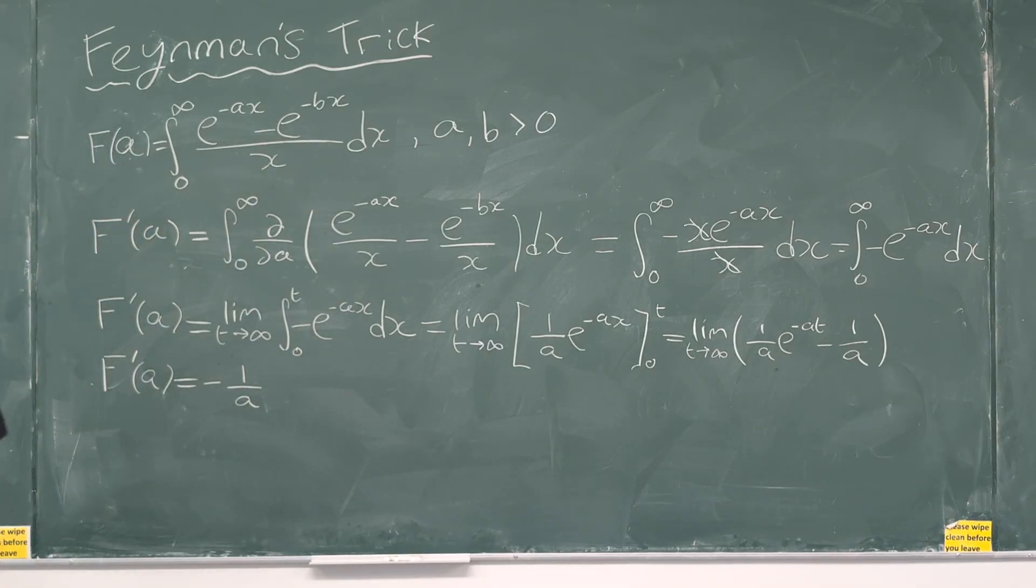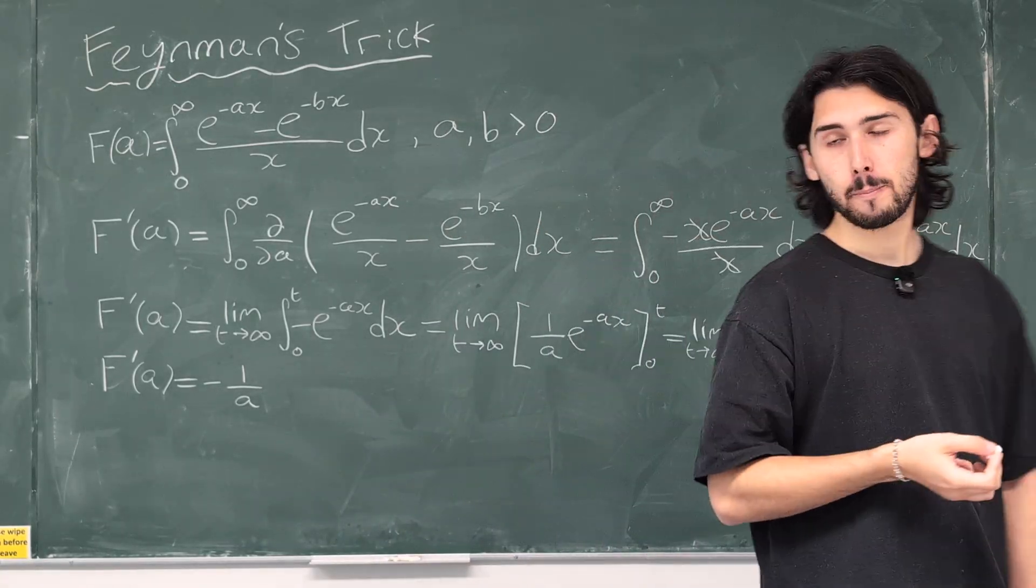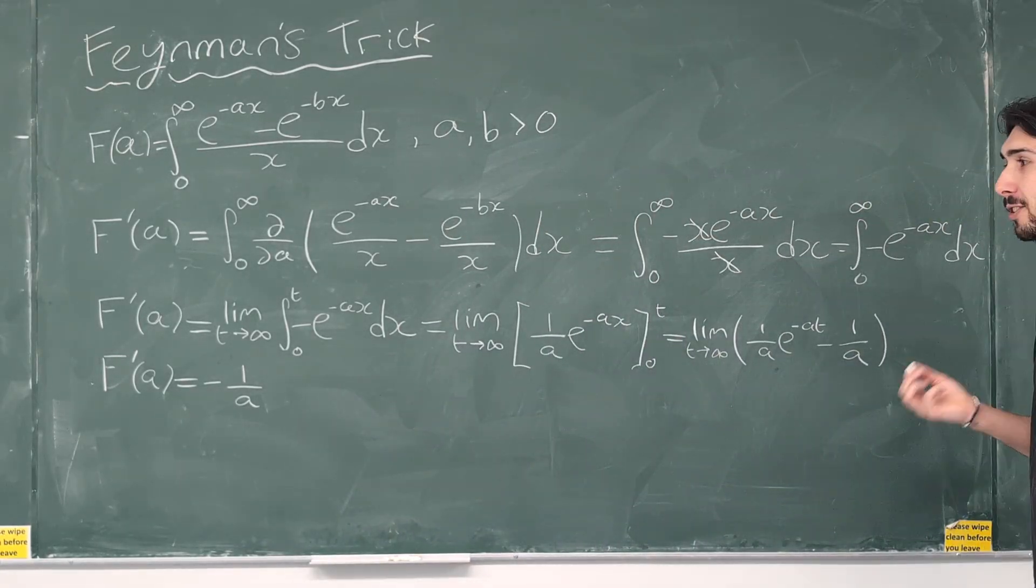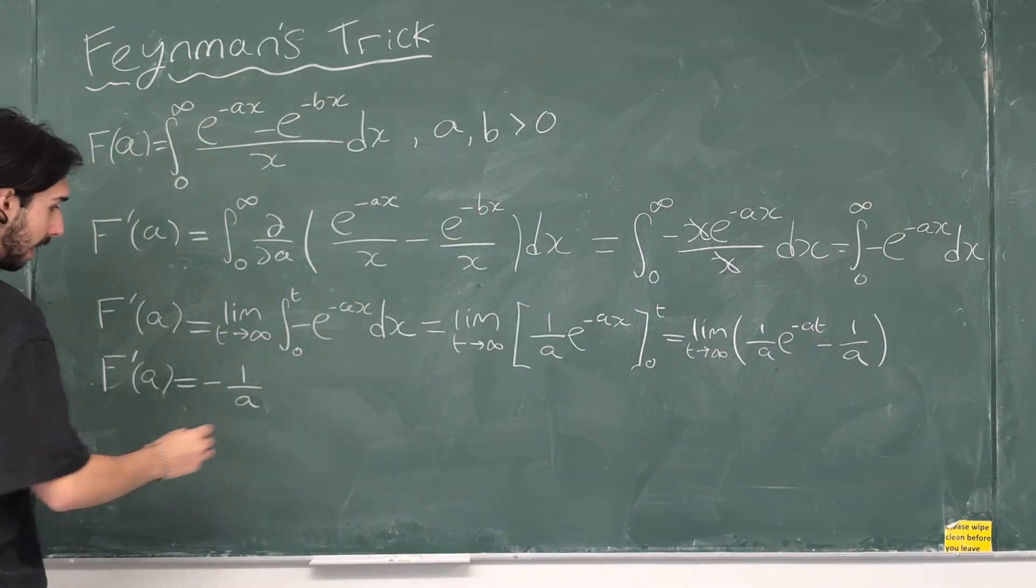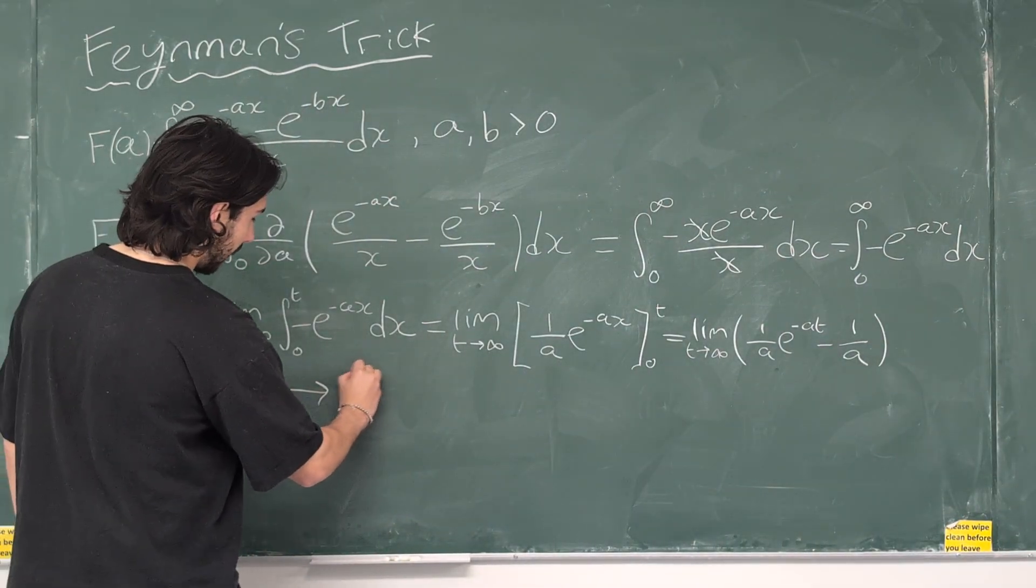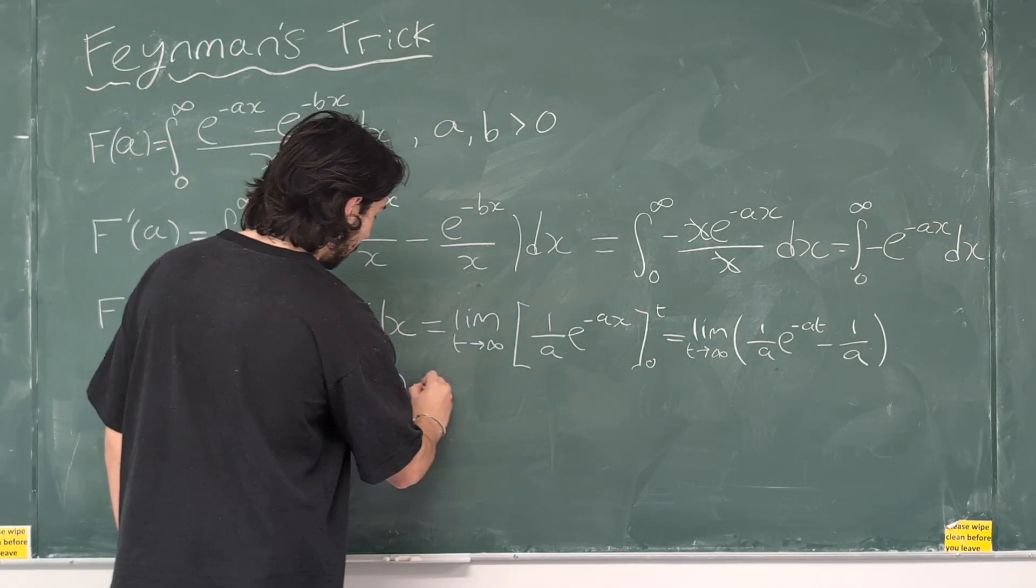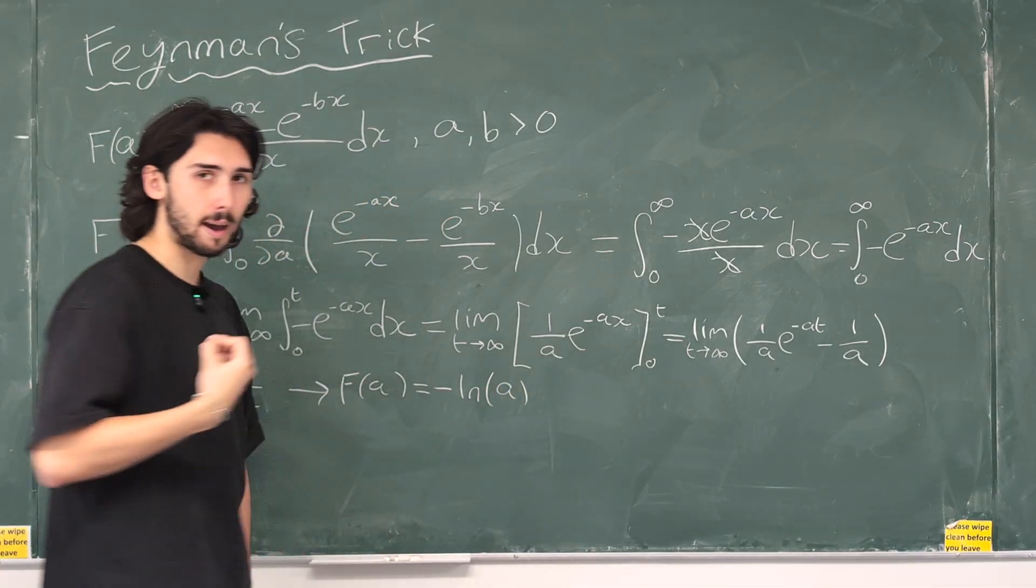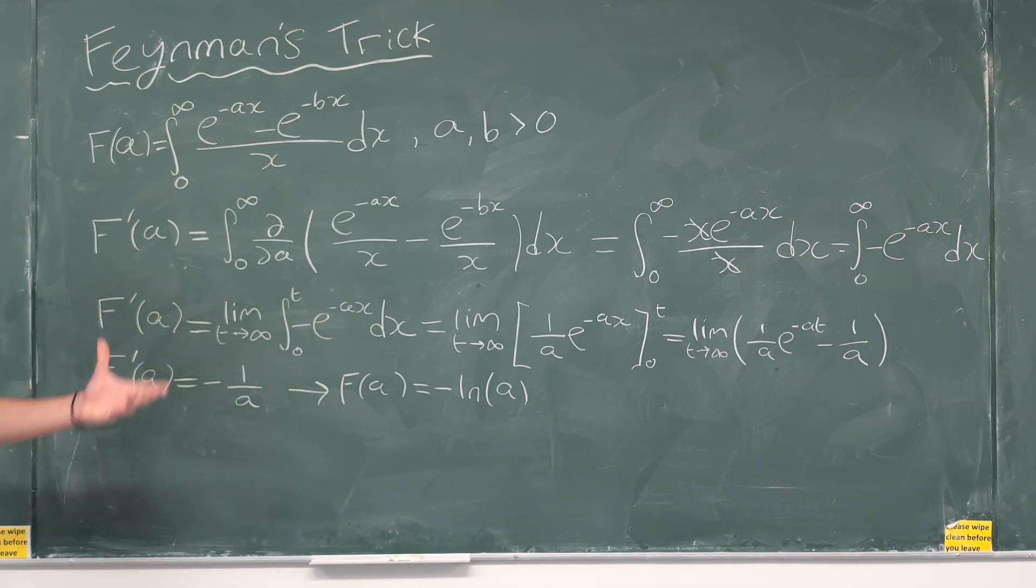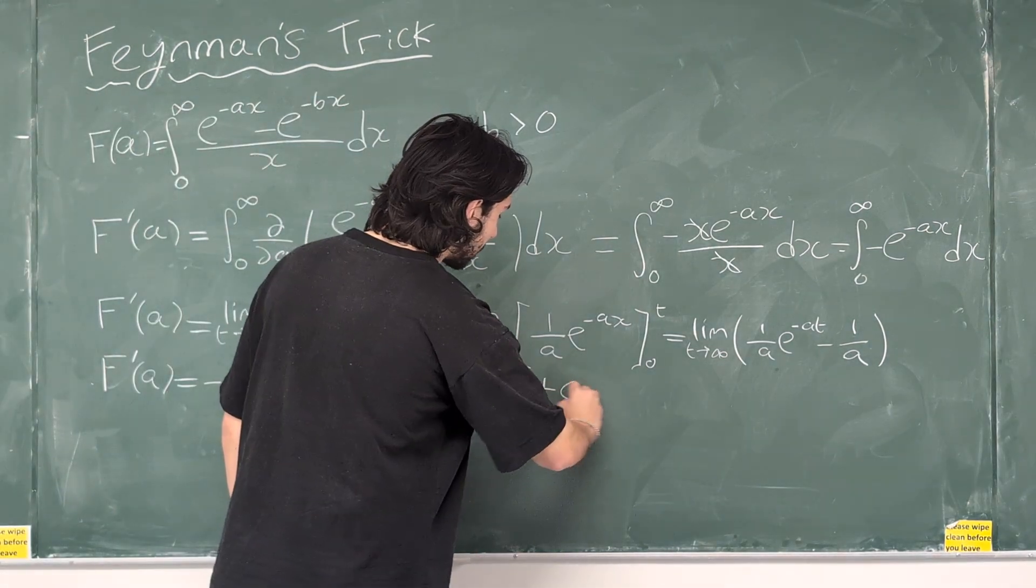Cool. Now, we're looking for f of a, not the derivative. So, all we have to do is integrate to get f of a. So, that means that f of a is the integral of minus 1 over a, which is minus the natural log of a. And again, I'm not doing absolute value, I'm not doing modulus because we've already said that a is a positive number. And of course, we need a plus c.